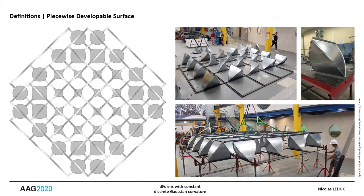We have experimented with this type of assembly in a full-scale prototype, where the shear modules are made of piecewise developable surfaces. A better understanding of the distribution of the Gaussian curvature in the seams has motivated the following study.